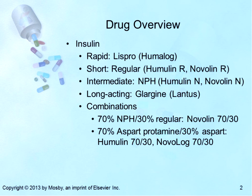Insulins are proteins that bind to cell wall receptors to allow cellular utilization of glucose. Insulin lowers blood glucose levels by stimulating peripheral glucose uptake, particularly in skeletal muscle and fat, and by inhibiting hepatic glucose production. An adequate supply of insulin is needed for transport of glucose across the cell membranes to sustain life. Most insulins used today are produced by DNA recombinant technology and are synthesized in a non-pathogenic strain of E. coli bacteria or Saccharomyces fungus.